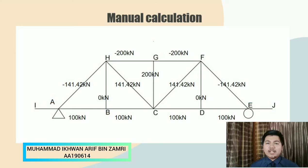Next we use method of joints to calculate the value of internal force for each member. So first the internal force at member AB, BC, CD, and DE we get 100 kilonewton which is tension.